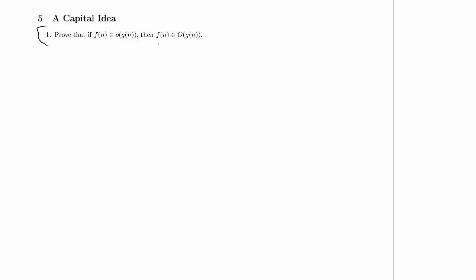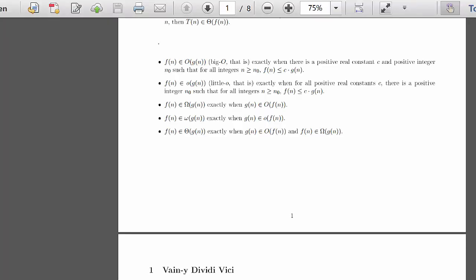We're going to start by looking at the definitions of little o and big O. f(n) is in little o of g(n) exactly when for all positive real constants c, there is a positive integer n0 such that for all integers n ≥ n0, f(n) ≤ c·g(n).